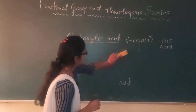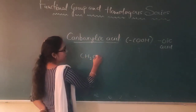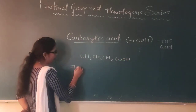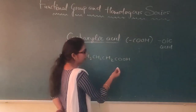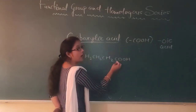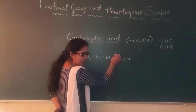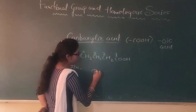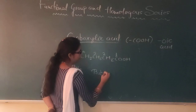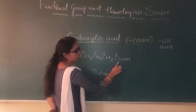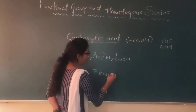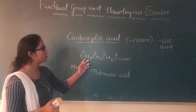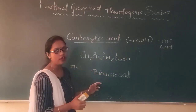One more compound we will take: CH3–CH2–CH2–COOH. IUPAC name of this compound. Carbon ko aap kahan se numbering doge? Jahan se functional group paas mein ho. So from right side: one, two, three, four. Four carbon means 'but', single bond means 'an', functional group is acid, so we will use 'oic acid' as a suffix. So name of CH3–CH2–CH2–COOH is butanoic acid. Is it clear to you students?